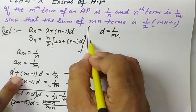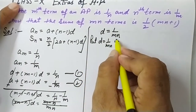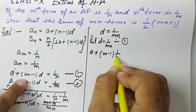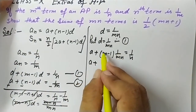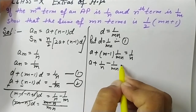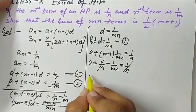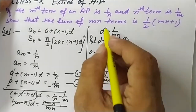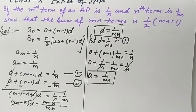Now we substitute d = 1/mn into equation 1 to find 'a'. We get: a + (m - 1) × (1/mn) = 1/n, so a + 1/n - 1/mn = 1/n. The 1/n terms cancel, so a = 1/mn. So we have a = 1/mn and d = 1/mn. Now that we have 'a' and 'd', we can find anything.